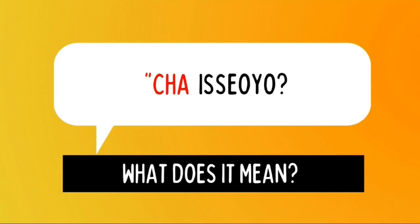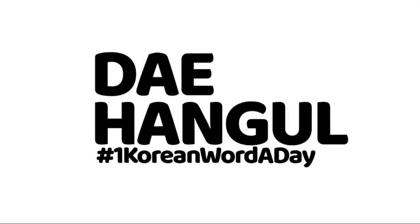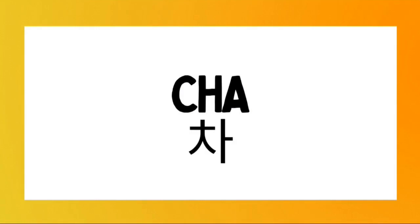Cha is soil — what does it mean? The word in red letter is cha. Today on One Korean Word a Day here at Day Hangul, we are going to study the word cha. Let's start. Learn Korean one word at a time, only here at Day Hangul. Word number 208. Cha — this is composed of just one syllable and is pronounced as cha.